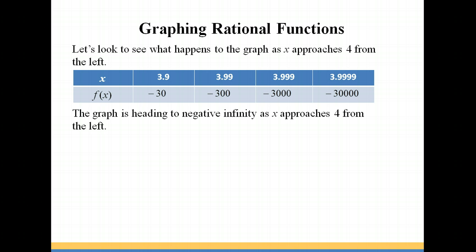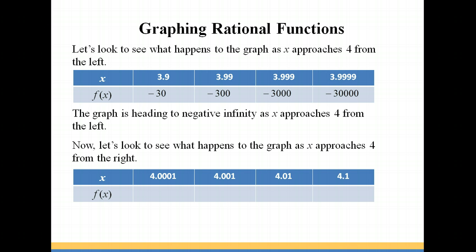Let's look to see what happens on the other side of 4. We're going to see what happens as the graph approaches 4 from the right side. So starting at 4.1, we have 30. 4.01, we're going up to 300. 4.001, we're up to 3,000. And then we jump all the way to 30,000. So we're heading in toward positive infinity as x approaches 4 from the right side.